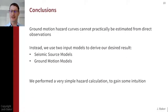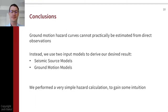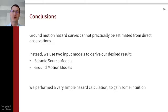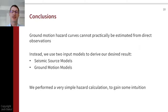That brings us to the end of this video. In summary, we can't observe ground motion hazard curves directly from observations because the amplitudes we're interested in are so rare. Instead, we put together two input models: a seismic source model, describing the rate of occurrence of earthquakes of different types, and a ground motion model, which tells us the probability that each earthquake rupture can produce ground motion amplitudes of interest. We combine them with the summation to get the rate of occurrence of the ground motion amplitudes we're interested in. We did a very simple hazard calculation to gain intuition about how this works, and hopefully that motivates you to go into more depth to understand how realistic calculations work. That's all for this video — I hope that was a useful introduction.